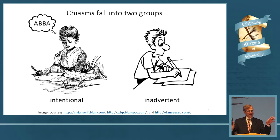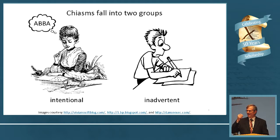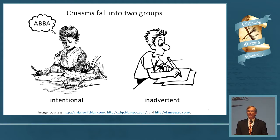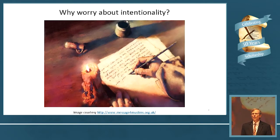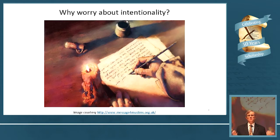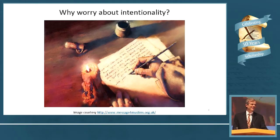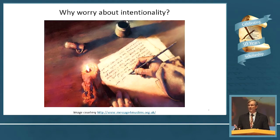I'm going to divide chiasms into two groups: those that are intentional — meaning consciously, deliberately, intentionally created in the mind of the author while he or she was writing the text — and those that are inadvertent, which were not consciously or deliberately done. Why worry about intentionality? It's all about meaning, because if we extract meaning from a chiasmus that wasn't originally intended by an author, that meaning does not necessarily reflect the emphasis of that author, and is therefore not as interesting.